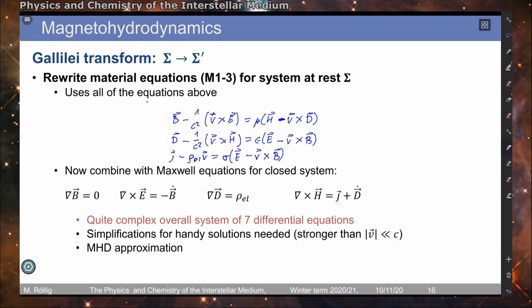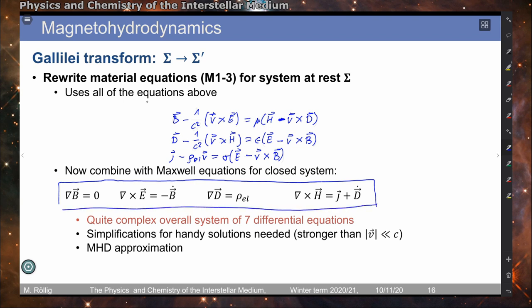When we combine these transformations with our Maxwell equations, we get a set of equations in the co-moving frame that describes the behavior of the fluid. We have the four Maxwell equations and the three material equations, giving us seven differential equations. We can simplify this, but to do so we need stronger assumptions — stronger than just looking at non-relativistic velocities. This is described in the part about the MHD approximations.